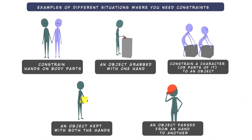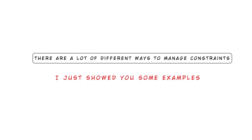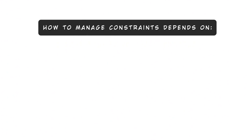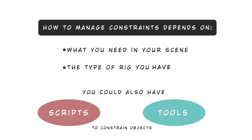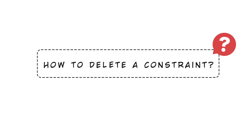These are just some examples of how to manage constraints in Maya. There are many different ways to do them — it really depends on what you need in your scene and the type of rig you have. There are also scripts and tools to automatically create constraints, especially in production, but if you're a beginner, this should be enough to start managing props in your animation.